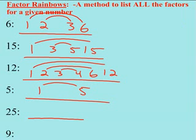Let's try another one here. 1 times 25. Does 2 go into 25? No. Does 3 go into 25? No. Does 4 go into 25? No. Does 5 go into 25? Yeah, 5 times.